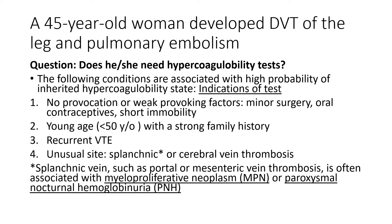Let's suppose that you have a 45-year-old woman who developed deep vein thrombosis of the leg and pulmonary embolism. Of course, you have started anticoagulation therapy. Now you wonder if she needs testing to find out whether she has inherited hypercoagulability conditions. If she has one of the following conditions, the chance of having a hypercoagulability condition is high.